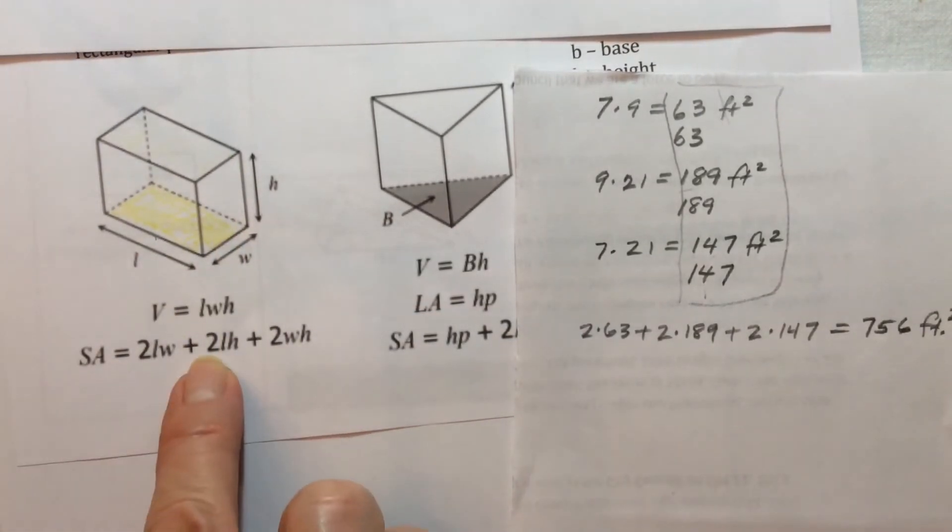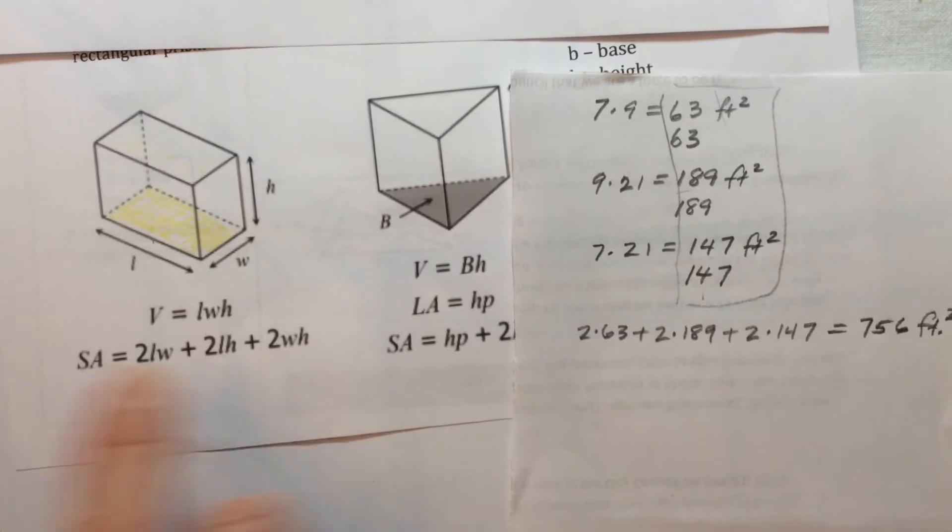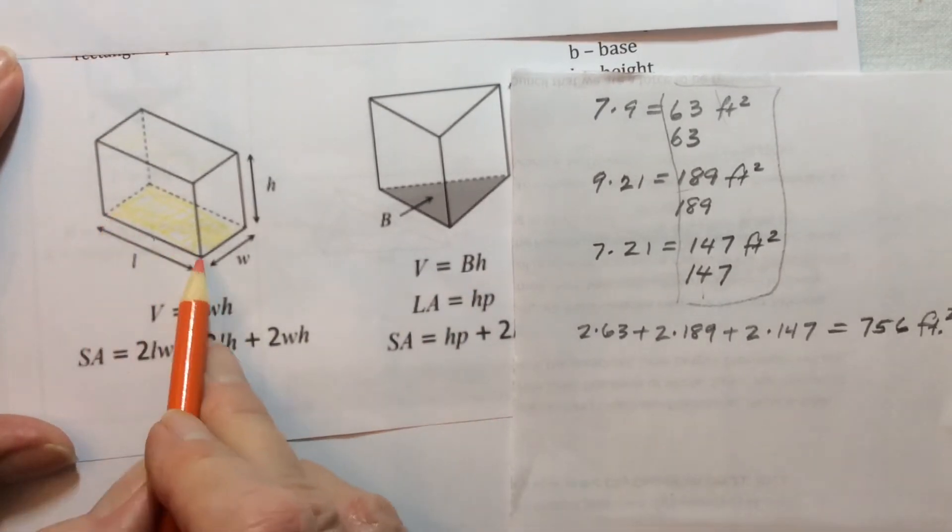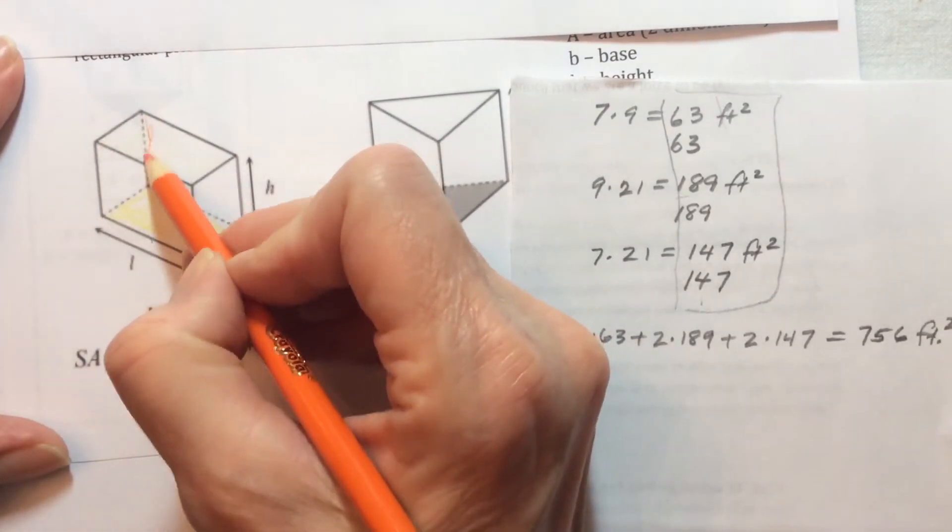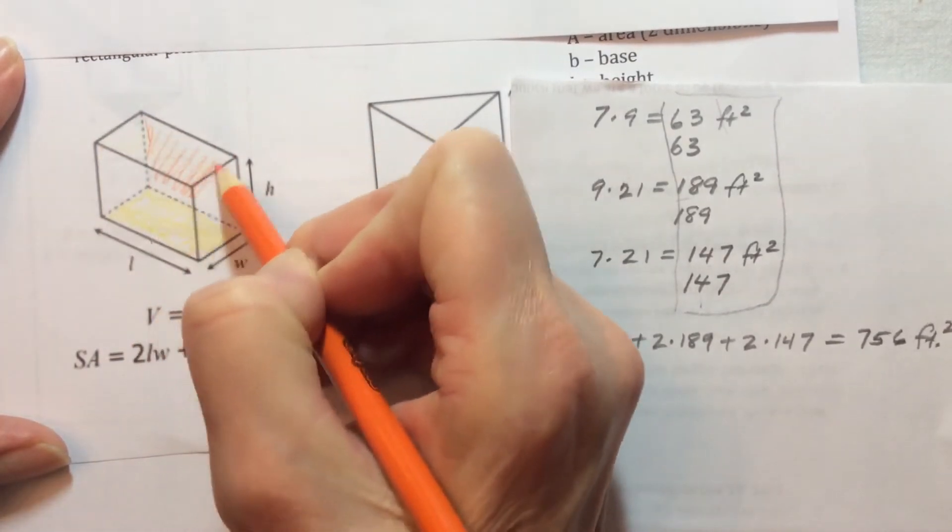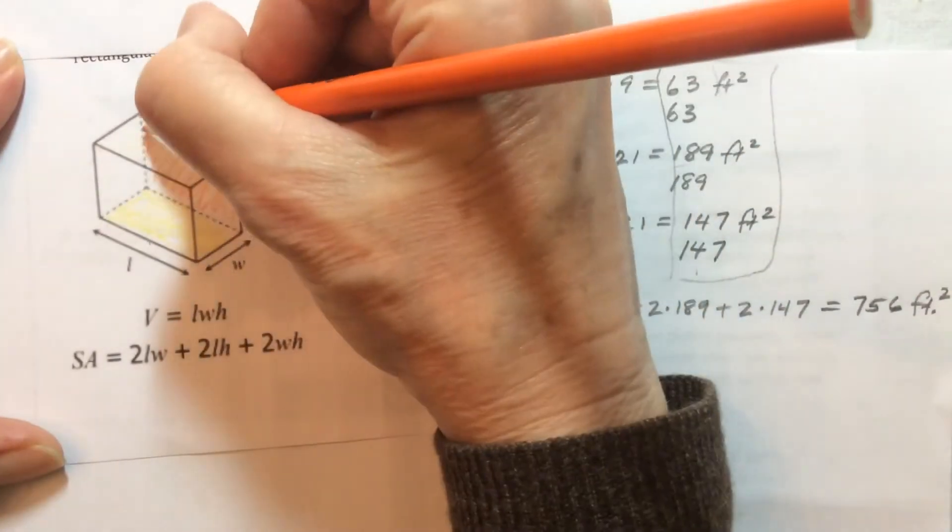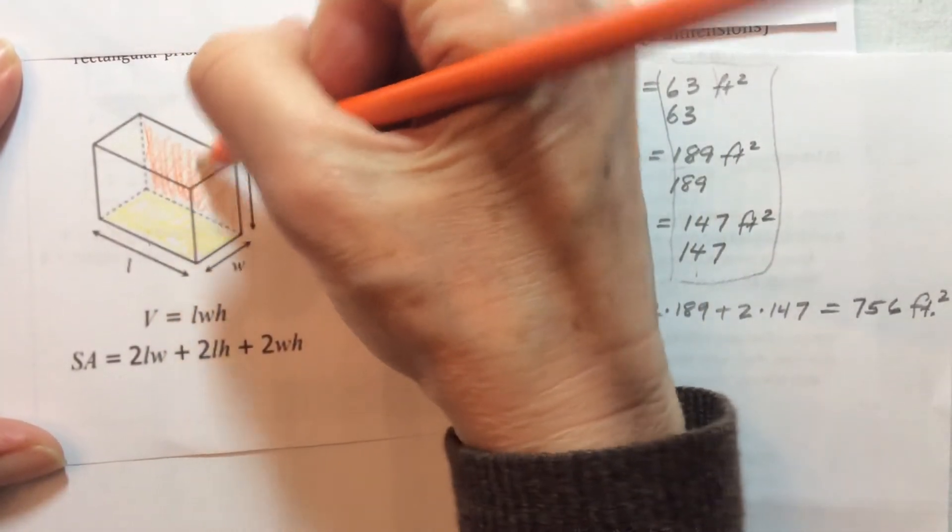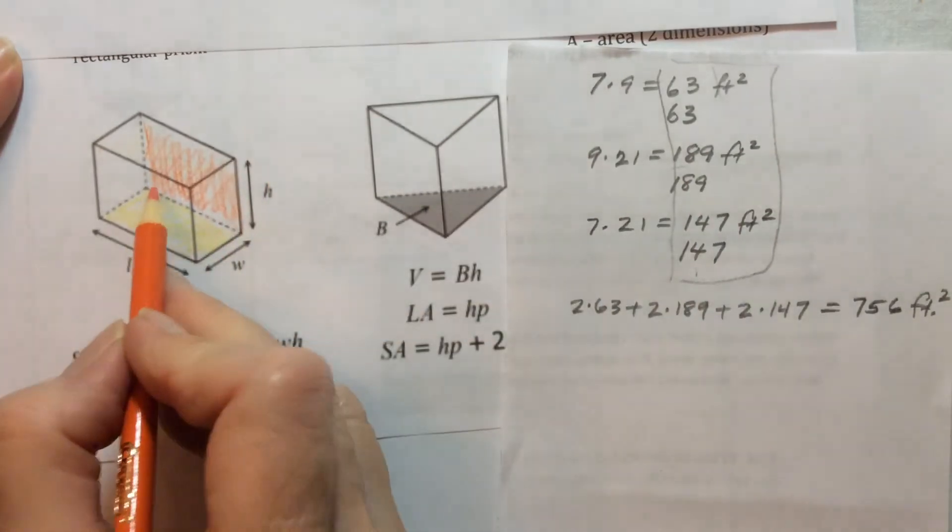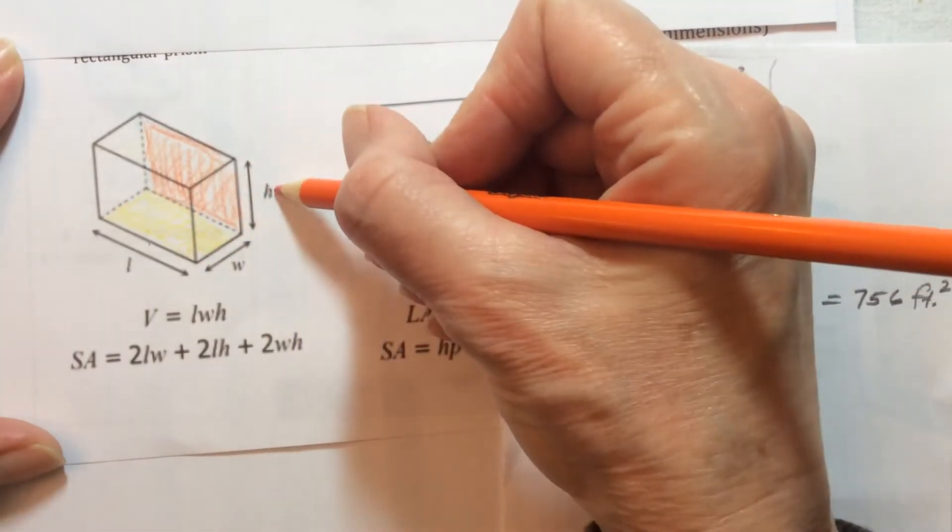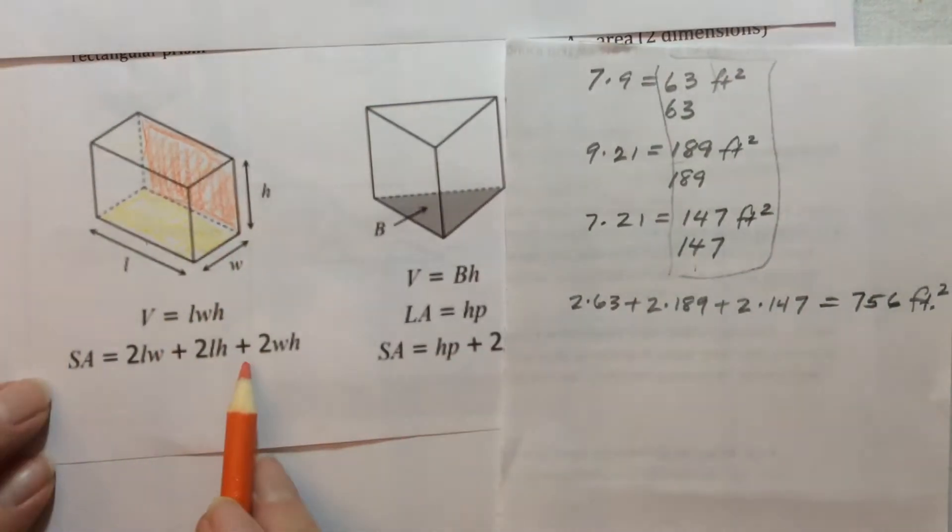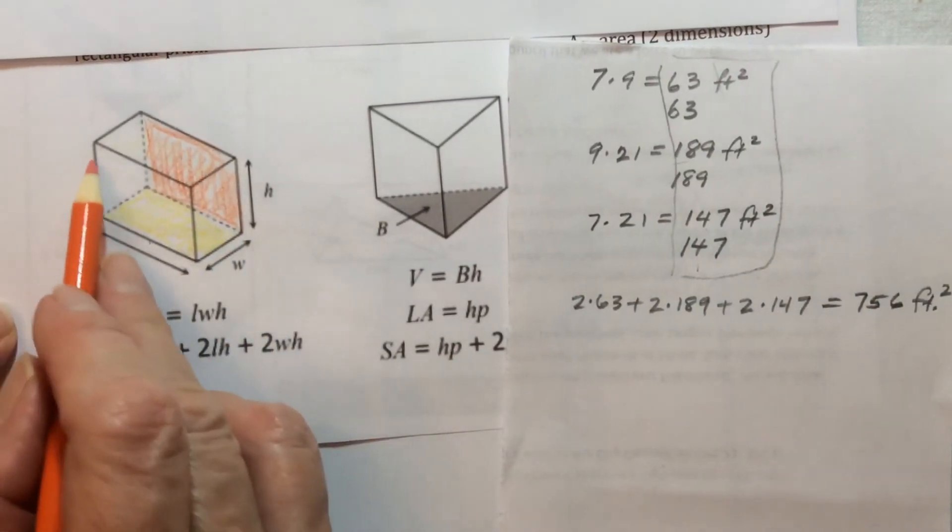The next is 2 times the length times the height. So that's this face right here, which is equal to the length times the height, and there are two of them: this one in front and the one in back.